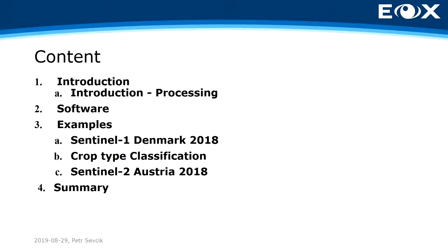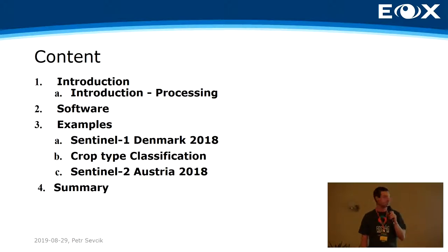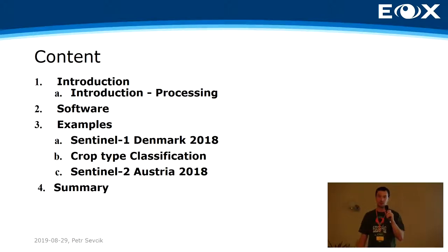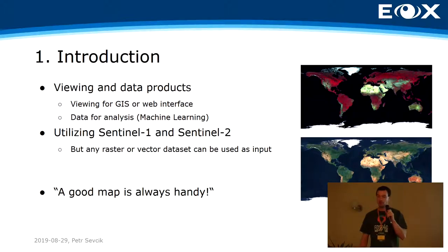Here is the outline of my presentation. First I'll talk about software and processing — how it's done and what it takes to create a global map of the whole world in a reasonable time. Then I have examples from Sentinel-1, crop type classification we are working on, and Sentinel-2 Austria monthly mosaics — meaning every month you get an image of Austria, similar to what Planet offers.